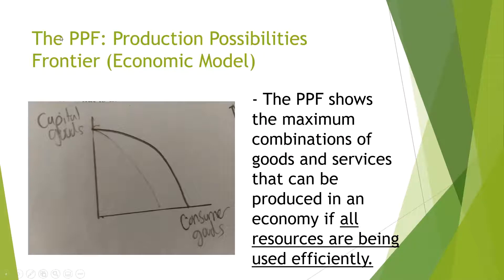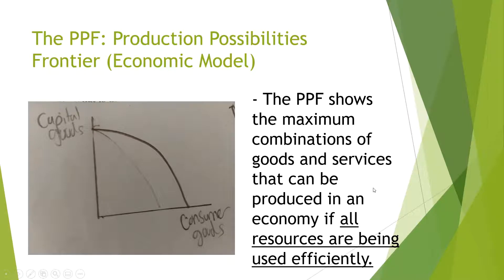Next, I'm going to go over one basic economic model in economics, and that is the PPF, or the Production Possibilities Frontier. As you can see from this drawing, it's just the X and Y axes with a curve on it, one side representing consumer goods and the other side representing capital goods. This graph shows the maximum combinations of goods and services that can be produced in an economy if all resources are being used efficiently.